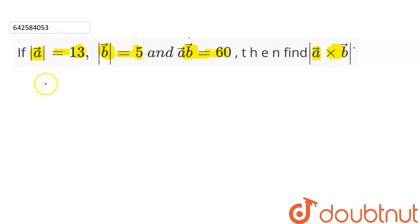So here we have been given that A vector dot B vector is equal to 60. As you know that A vector dot B vector can be written as mod of A vector, mod of B vector into cos theta.